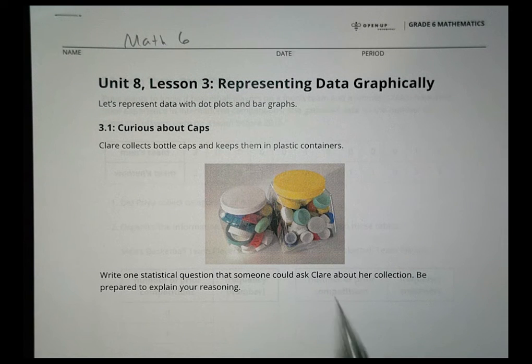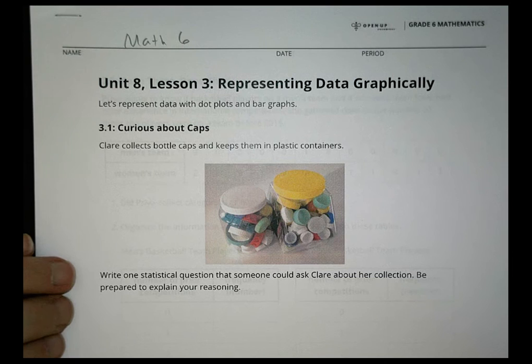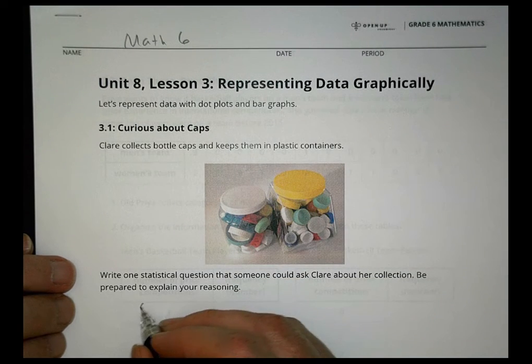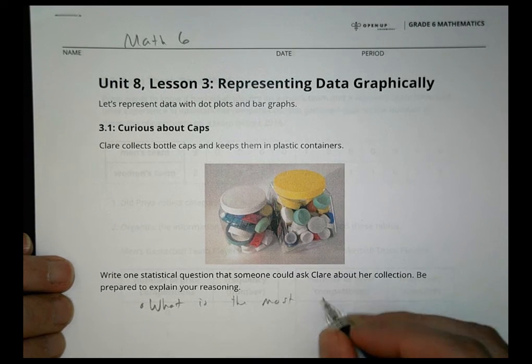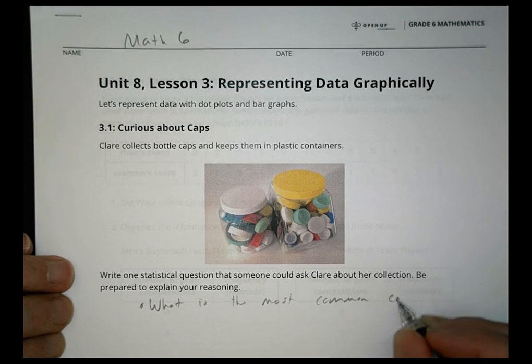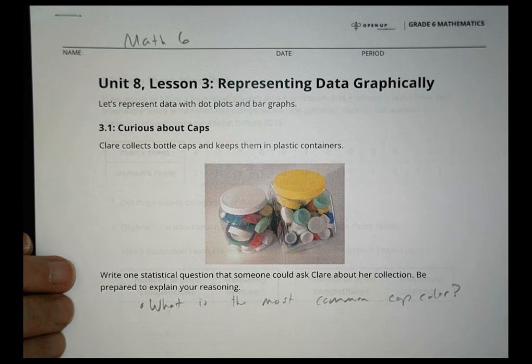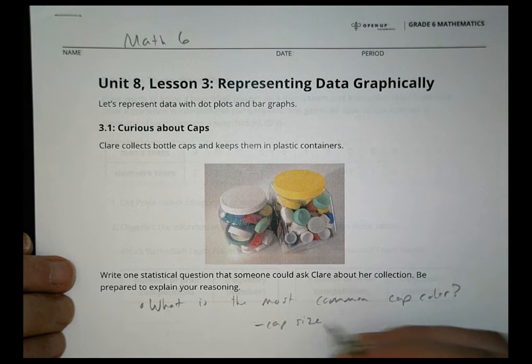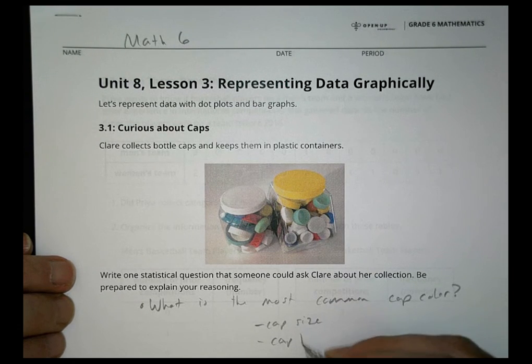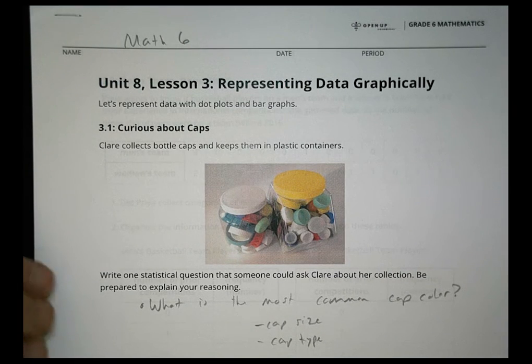Claire collects bottle caps and keeps them in plastic containers. Write one statistical question that someone could ask Claire about her collection. Be prepared to explain your reasoning. So something she could ask, what is the most common cap color? You have to take them out, count them, compare them. You can do common cap color, cap size, cap type - some might be flip lids, some may be screw lids. There are different things you could compare there.